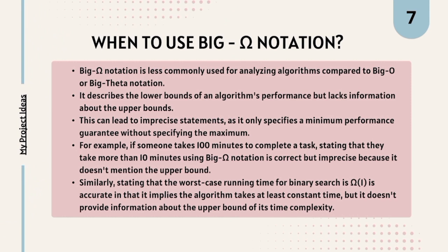When do you need to use Big Omega notation? It is mostly not used for analyzing algorithms because we typically use Big O or Big Theta. Big O gives the upper bound, and Big Theta gives a tight bound. Big Omega describes the lower bound of an algorithm's performance, but it lacks information about the upper bound, which can lead to imprecise statements — it only specifies a minimum performance guarantee without specifying the maximum.